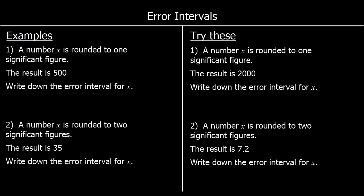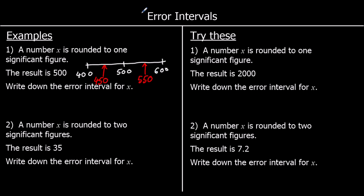Another example: a number x is rounded to one significant figure, the result is 500 — write the error interval for x. To one significant figure, the one up is 600 and the one back is 400, so our number could have been anything between the two halfway points: 450 and 550. It can equal 450 — that would round up to 500 — but it cannot equal 550. So x is bigger than or equal to 450 and less than 550.